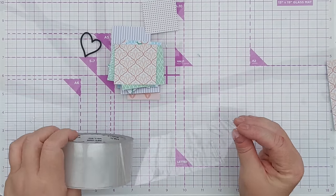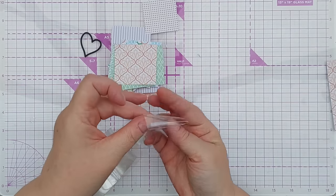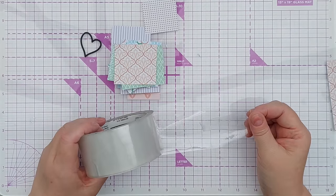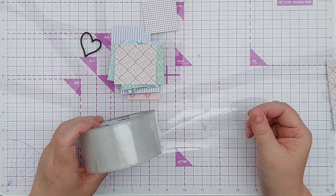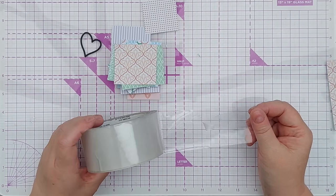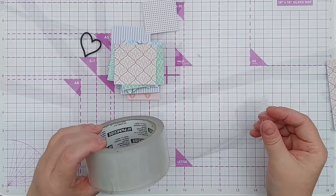then you could use something like glossy accents after you've cut them or you could heat emboss them with clear embossing powder or you could see if you can find some clear tape that is acid free and archival that won't yellow over time.